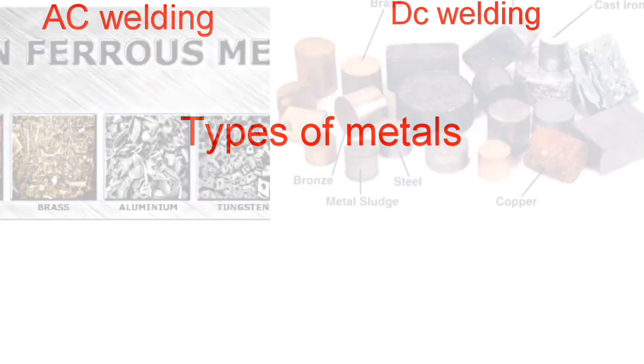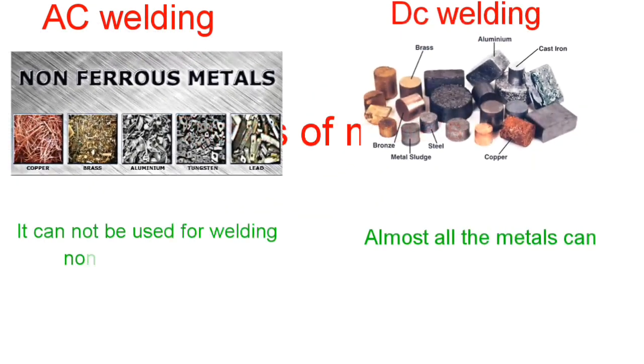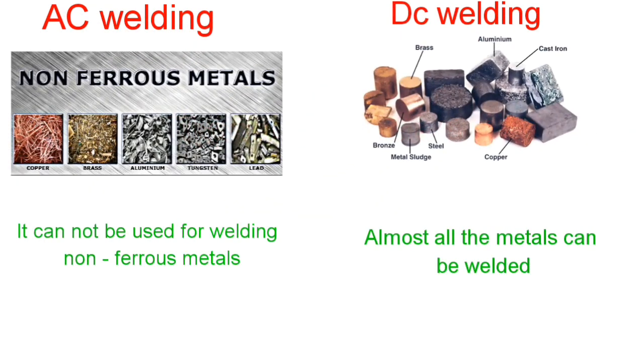Types of Metal: In AC welding, it cannot be used for welding non-ferrous metals, whereas in DC welding almost all metals can be welded.